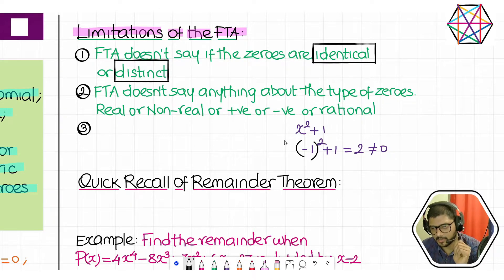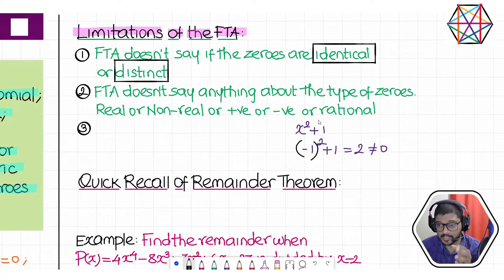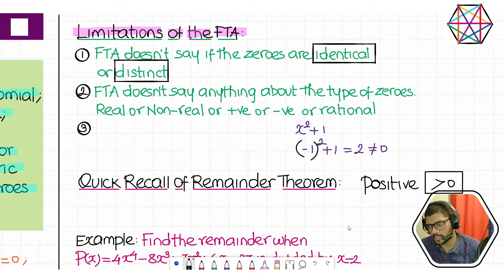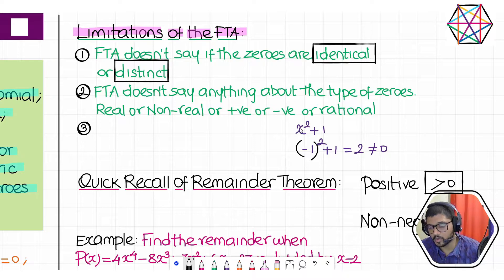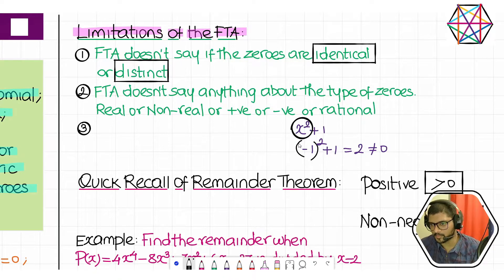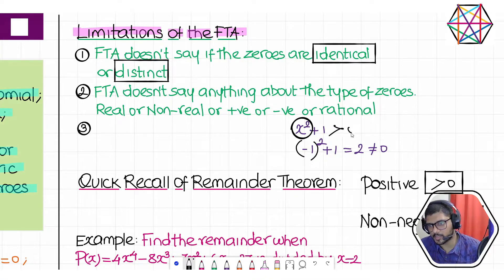What can you say about the square of any real number? Square of any real number is non-negative — not just positive, but non-negative. So x squared is non-negative no matter what real number you substitute. But after adding 1 to it, can it be equal to zero? No — it is going to be strictly greater than zero. So x squared plus 1 is always positive, and you cannot find any real number x for which it equals zero.